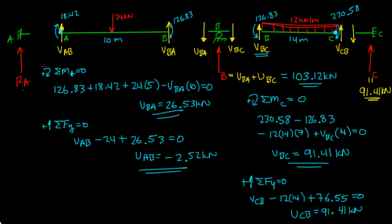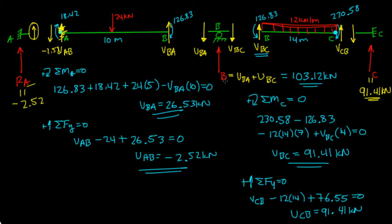The reaction at a: V_ab was going down at negative 2.52, so on the support side it's equal and opposite — going up. That means the reaction at a is negative 2.52 kilonewtons, because 2.52 is going up on the beam side, so the reaction must go down. Now we know reactions at a, b, and c, so we're ready to draw the shear and moment diagram. See you in the next video.